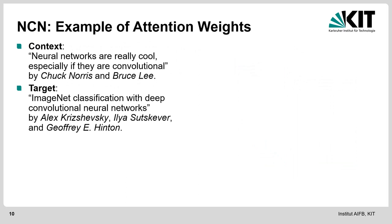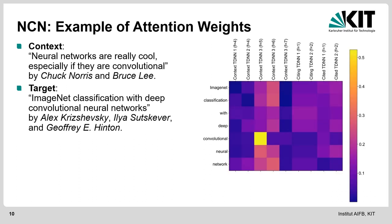Here's an example of how this looks. If you have the citation context 'Neural networks are really cool, especially if they are convolutional,' with citing authors Chuck Norris and Bruce Lee as an example, and the target is 'ImageNet Classification with Deep Convolutional Neural Networks' by more well-known authors, we can visualize the attention weights. The columns represent the context, citing author, and cited author information. We can see the highlighting is mainly on 'convolutional,' a little on 'neural network,' and a little on 'ImageNet' — so the model correctly focuses on the signal words, since Chuck Norris and Bruce Lee are not really indicative here.